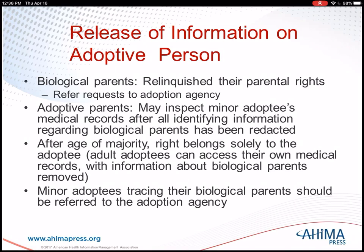Let's check the answer key — section 15.3. Number five is false. Number three — some states do provide that physical and mental health information can be given at the time of the adoption — that is true. Number four — the adoptee's birth record is restricted unless both parties have agreed their identities be disclosed — that is true. And then the last one, number five — only the adult adoptee can decide if he or she may access health information of biological parents for health risk purposes — that is false.